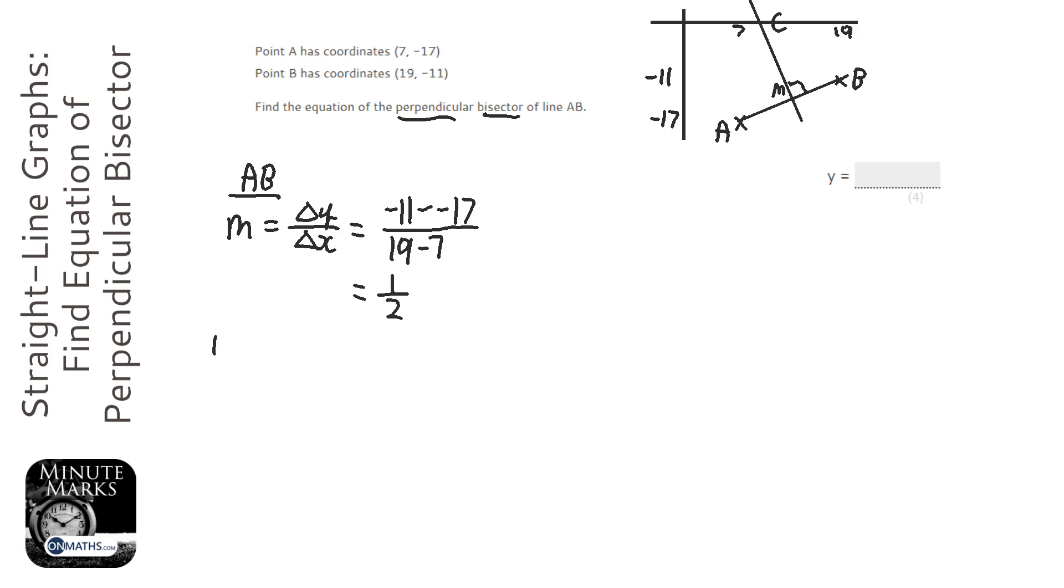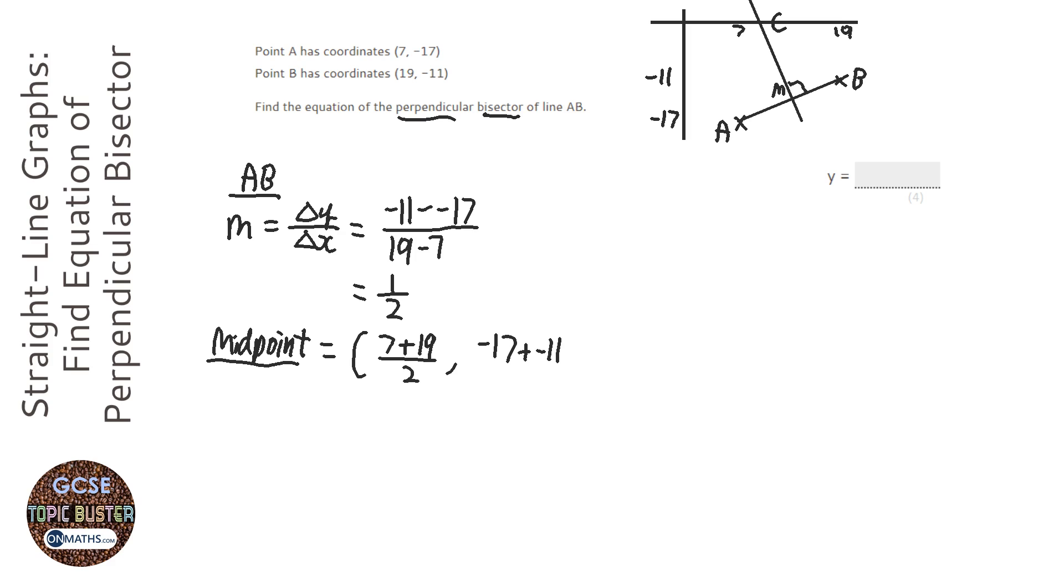Next I need to find the midpoint, because we know that that's also a point on line C. So the midpoint is going to be the average of the x's, so 7 plus 19 over 2, and then the average of the y's, so minus 17 plus minus 11 over 2. We're basically just finding the halfway points. Obviously 7 plus 19 is 26, divided by 2 is 13, but you might have just noticed that 13 is halfway between 7 and 19. Same with the others, halfway between the two of them is going to be minus 14.